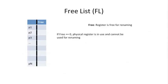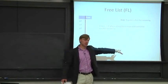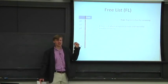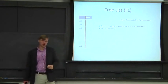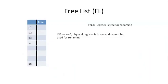Finally, we have the free list. This is literally just a bit per physical register — which is very different from a bit per architectural register. Say we have 256 physical registers; each has a bit saying whether that register has been deallocated and is ready for future register renaming, or whether there's an instruction currently using it or waiting to commit to the architectural register file. It's just a bit saying whether it's free or not. Pretty simple.